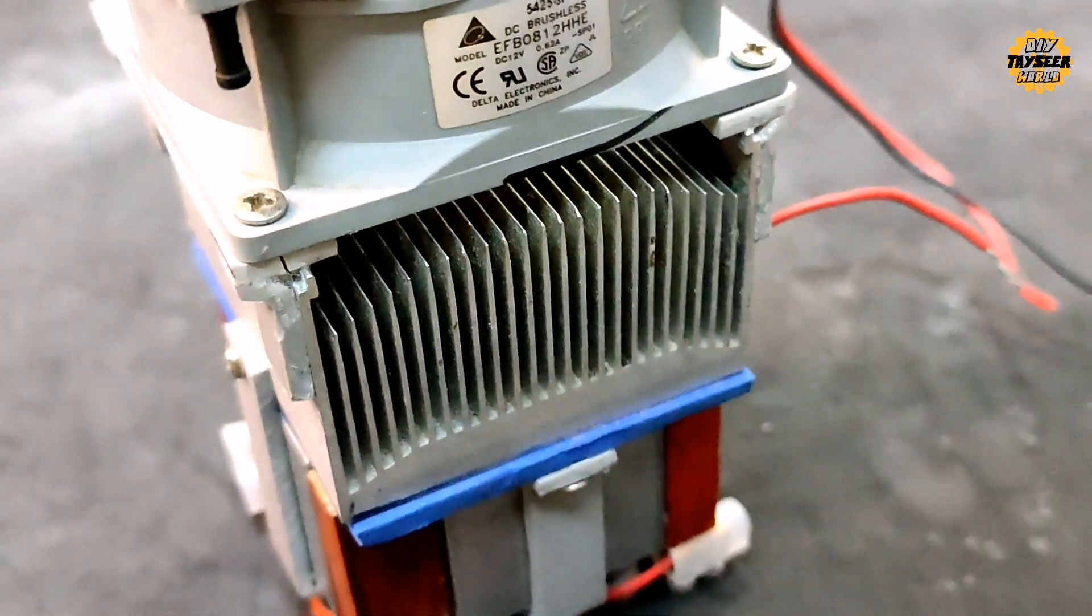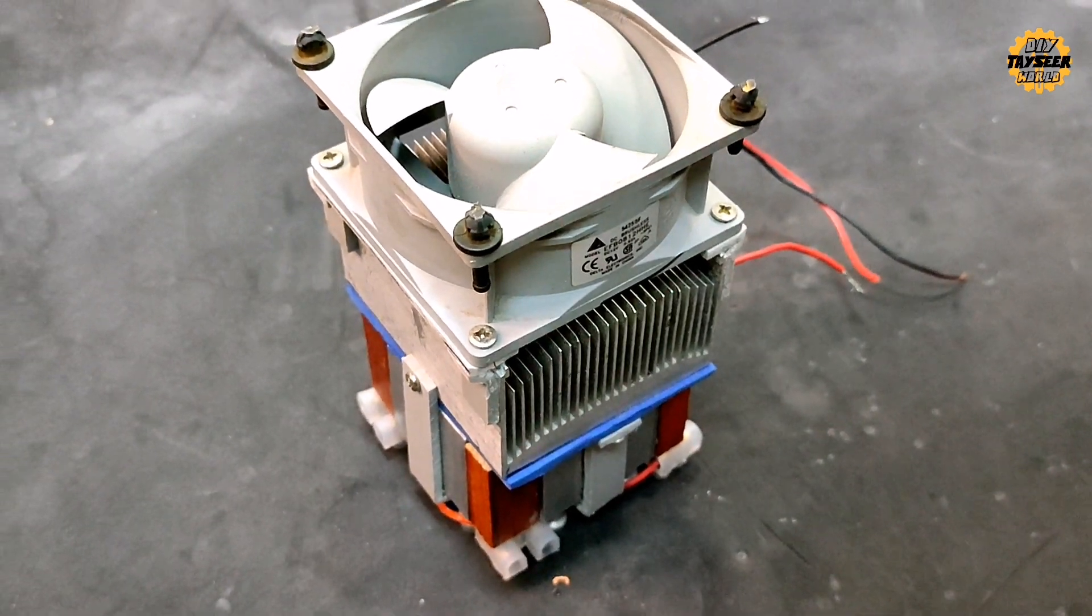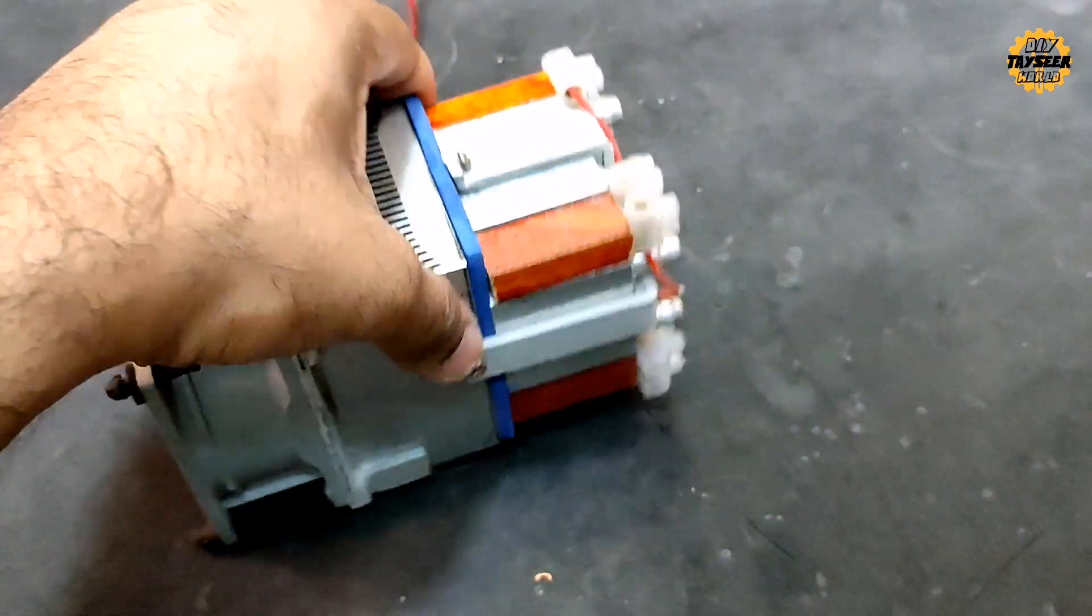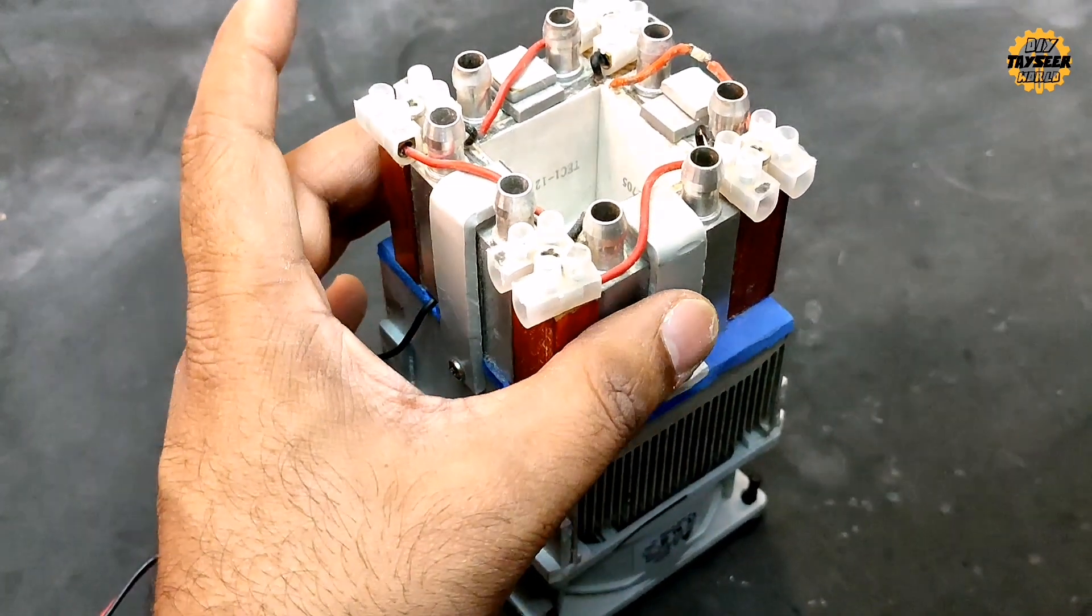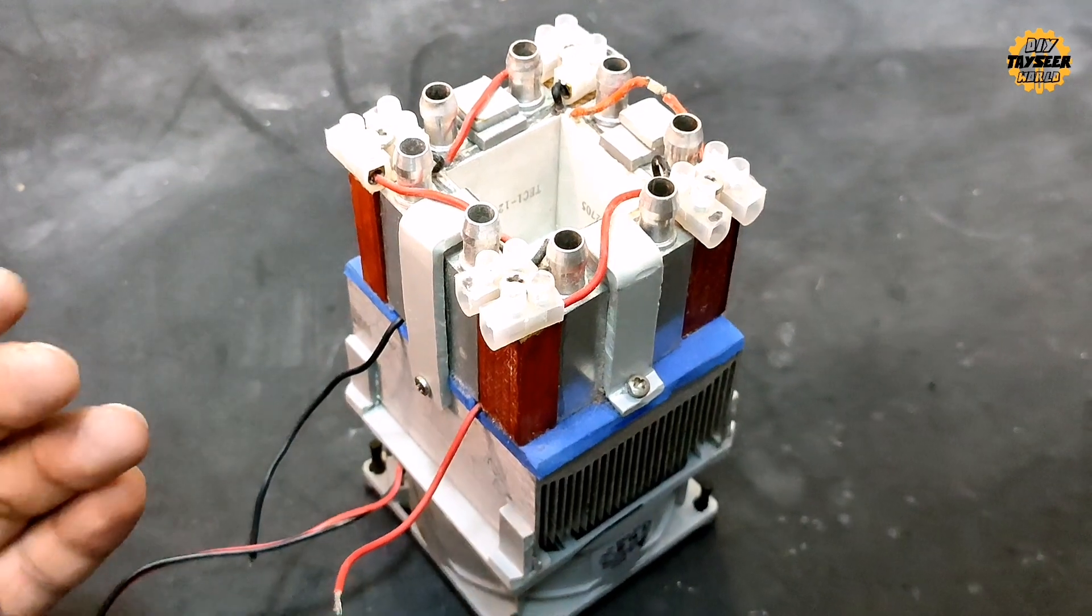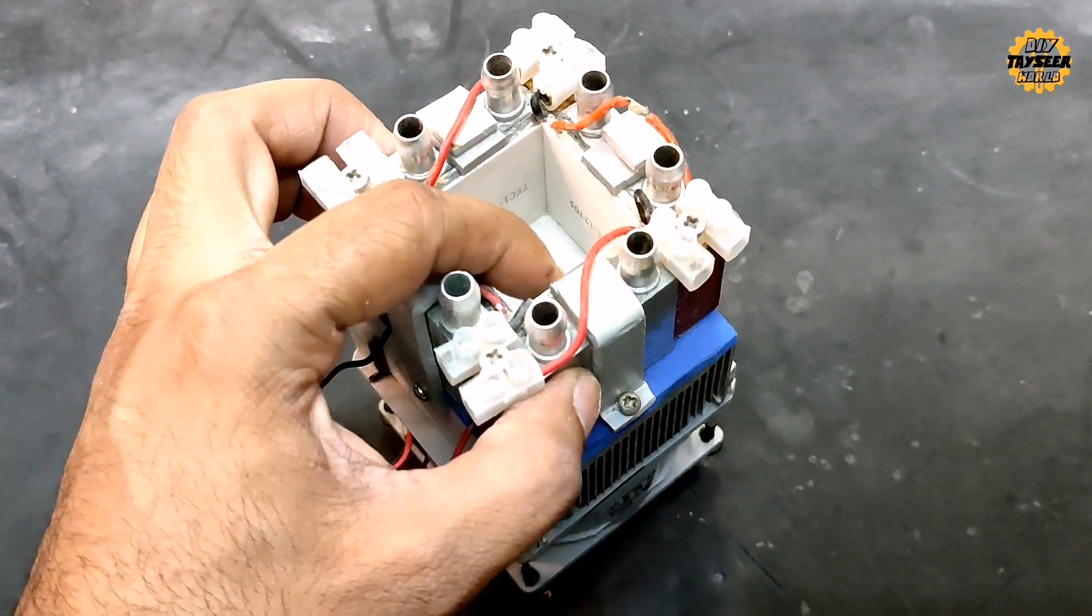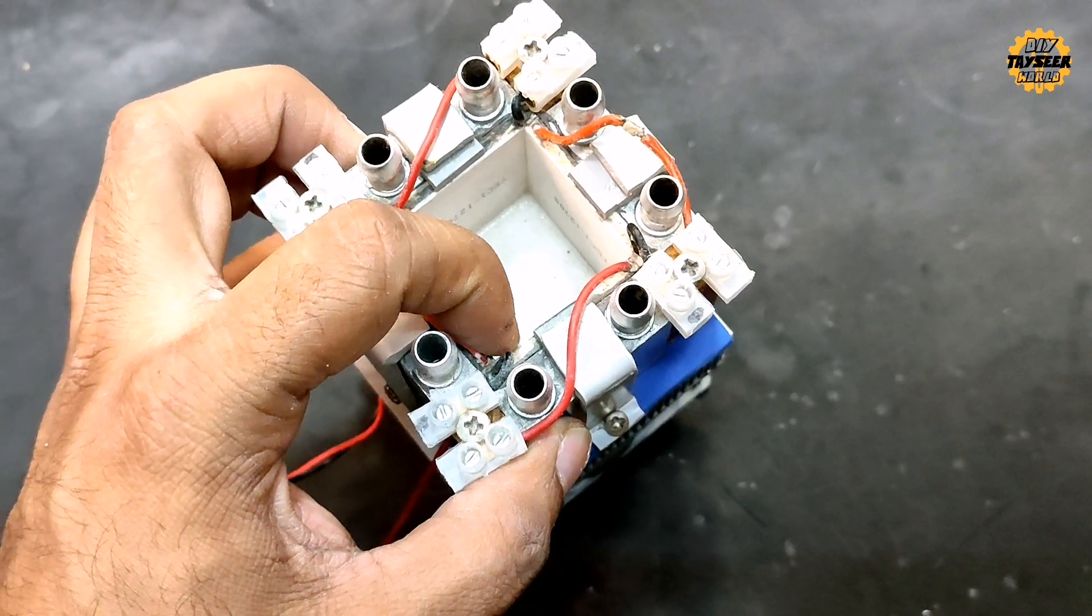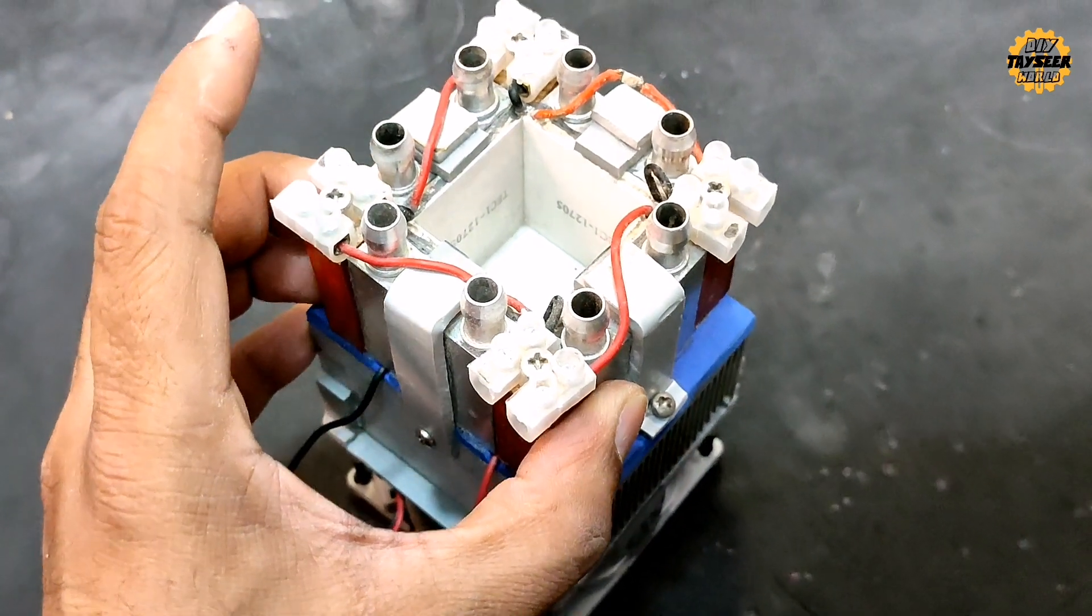This fan consumes about 1 amp. And 5 peltiers, each peltier consumes 5 amps. So we need to use a water circulation system and radiator which will circulate. The peltier's heat will be removed from the pump and the heat will be exhausted through the fan. If the heat is removed, the cooling will work.